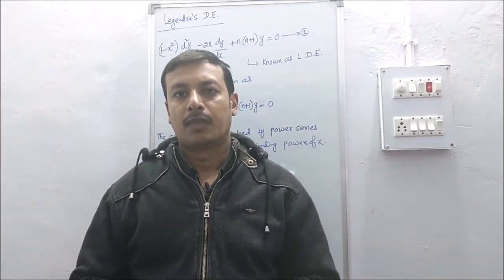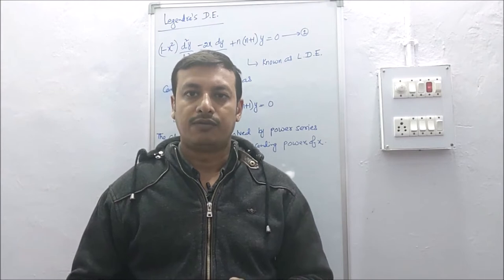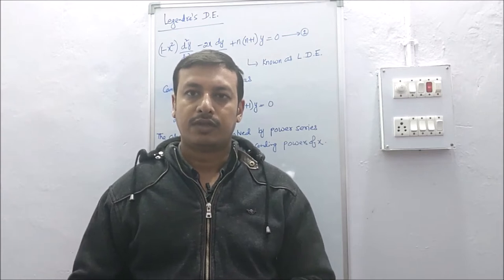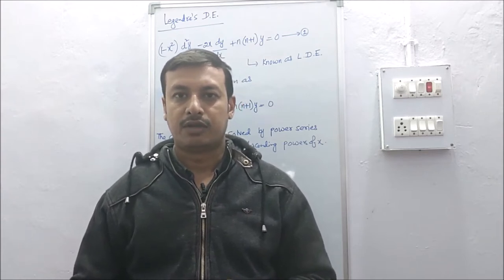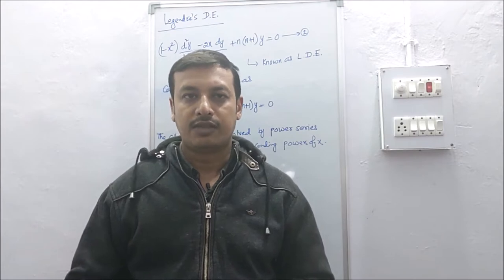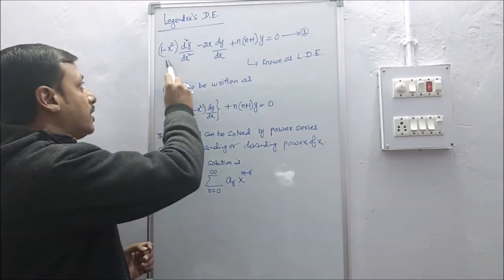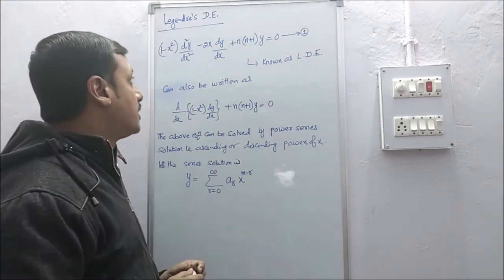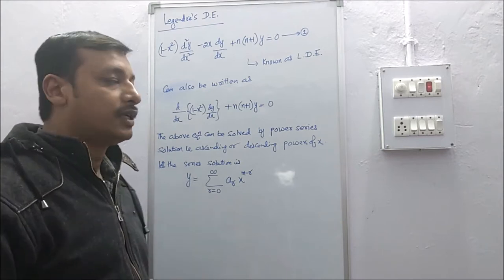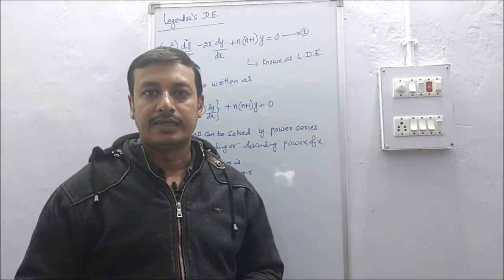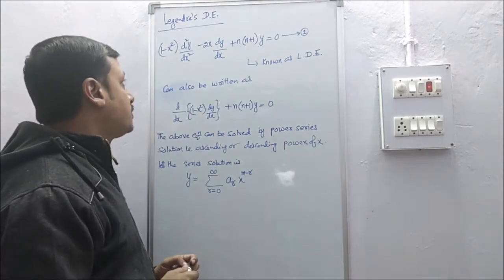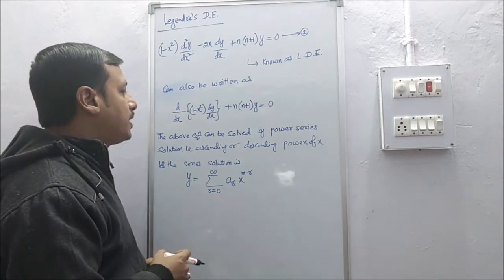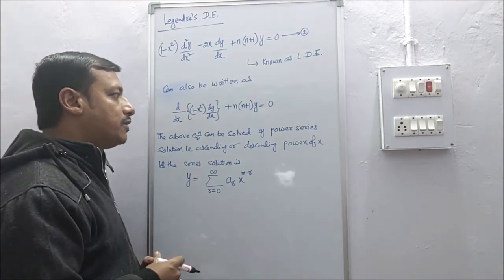After power series solution, there are four types of differential equations to study in the third semester. The first is the Legendre differential equation, which has the form: 1 minus x squared times d²y/dx² minus 2x dy/dx plus n(n+1)y equals 0. This equation can also be written as d/dx[(1 minus x²) dy/dx] plus n(n+1)y equals 0.